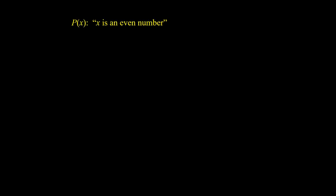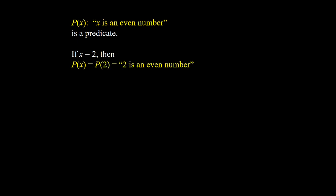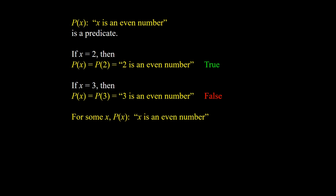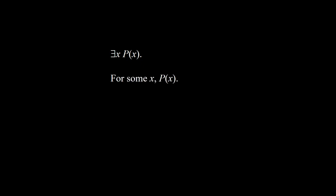Existential quantifier. Let p(x) stand for 'x is an even number'. We cannot say it is true or false, so it is an open statement — it is a predicate. If x is 2, then p(x) equals p(2), that is '2 is an even number', and of course it is true. If x is 3, then p(x) is p(3), which equals '3 is an even number', and of course this is false. Therefore, for some x, p(x) is true.